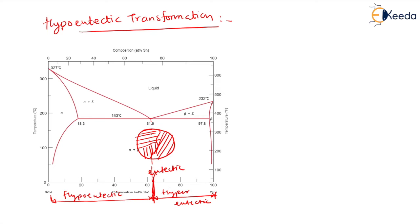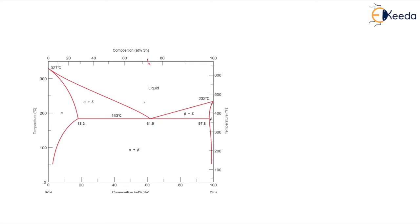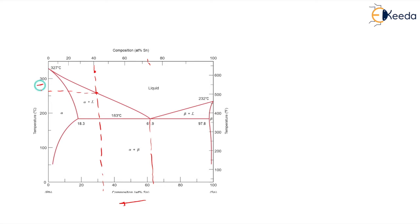To analyze this, we have to consider the region to the left of the eutectic point — this is the Hypoeutectic region. So let us consider a composition line in the Hypoeutectic region somewhere here. If you see, this line is the liquidus line. Above this, everything is liquid.